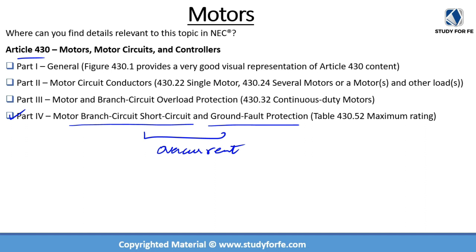Part 4 of Article 430 is titled Motor Branch Circuit, Short Circuit and Ground Fault Protection — basically overcurrent protection. The most important content in Part 4 is Table 430.52, which provides the maximum rating or setting of Motor Branch Circuit, Short Circuit and Ground Fault Protective Devices. Using this table, you can identify your scenario — single phase motor, multi-phase motor, squirrel cage, synchronous, or wound rotor motor — and whether you're using non-time delay fuses, time delay fuses, instantaneous trip breaker, or inverse time breaker. Part 3 deals with overload conditions; Part 4 deals with overcurrent situations including short circuit and ground fault.